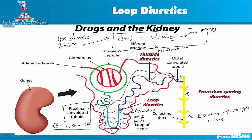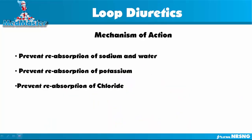Now that we understand the mechanism of action of loop diuretics, let's summarize what it does in the nephron, specifically in the ascending loop of Henle. Understanding these three main mechanisms of action will help us understand the side effects and nursing considerations as well. In summary, loop diuretics prevent the reabsorption of sodium, water, potassium, and chloride.